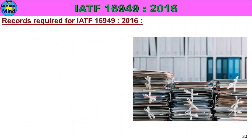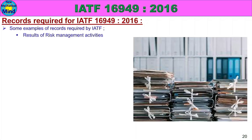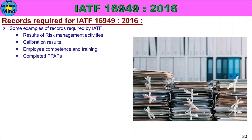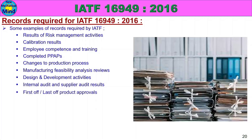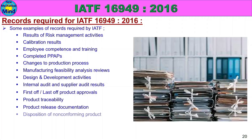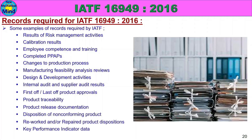Records required for IATF 16949-2016 include: results of risk management activities, calibration results, employee competence and training, completed PPAP (peep ups), changes to production process, manufacturing feasibility analysis review, design and development activities, internal audit and supplier audit results, first-off/last-off product approvals, product traceability, product release documentation, disposition of non-conforming product, reworked and repaired product dispositions, key performance indicator data, and management review results.